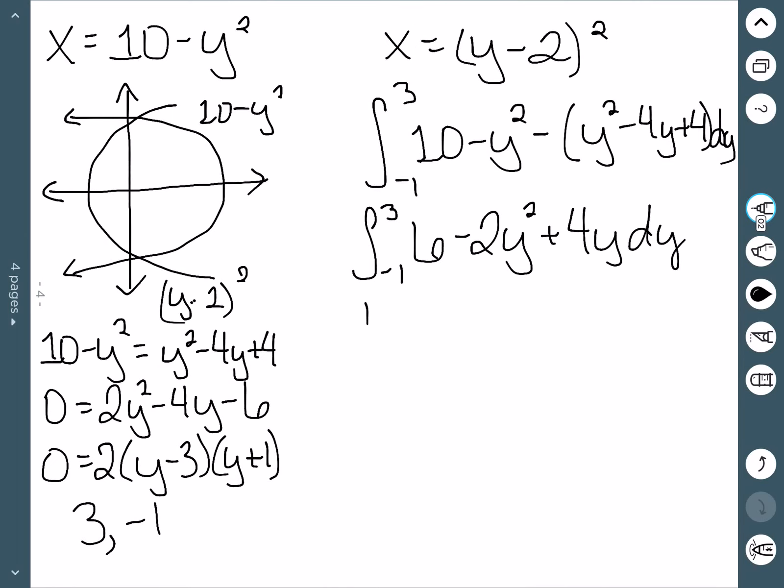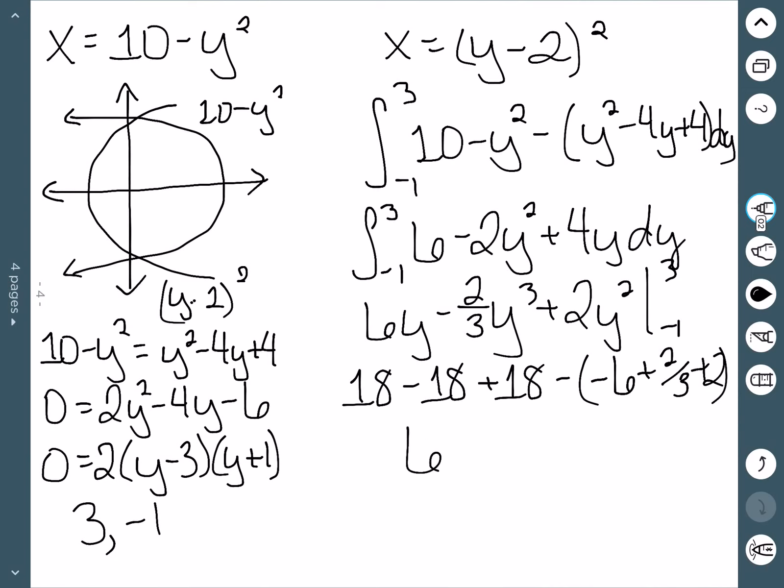So this becomes 6y-(2/3)y³+2y² going between -1 and 3. Evaluating at 3: 3 times 6 is 18, 3 cubed is 27 times 2/3 is 18, and 3 squared is 9 times 2 is 18. If I stick in -1, I get -6+2/3+2. And this gives me an area of 64/3.